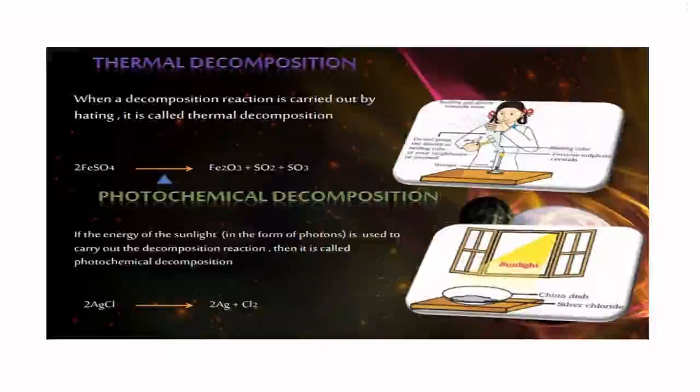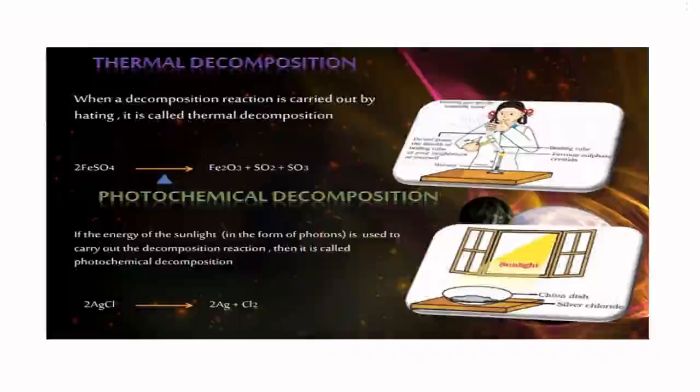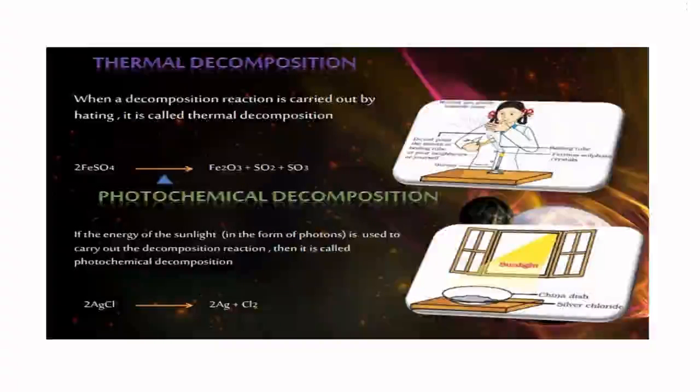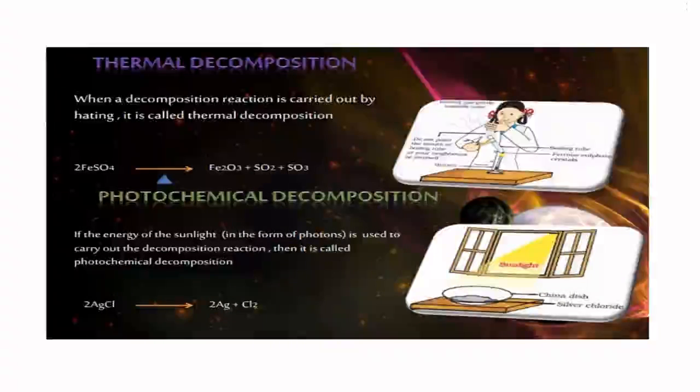Next one: photochemical decomposition. If the energy of sunlight in the form of photons is used to carry out the decomposition reaction, it is called photochemical decomposition. Silver chloride is an example. 2AgCl gives 2Ag + Cl2 on exposure to sunlight.